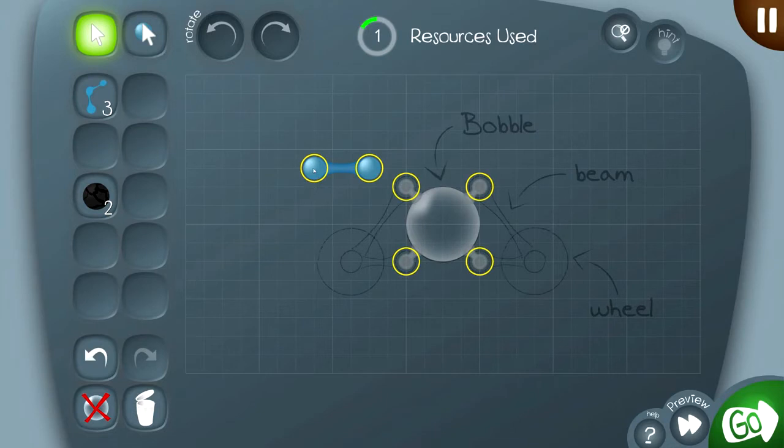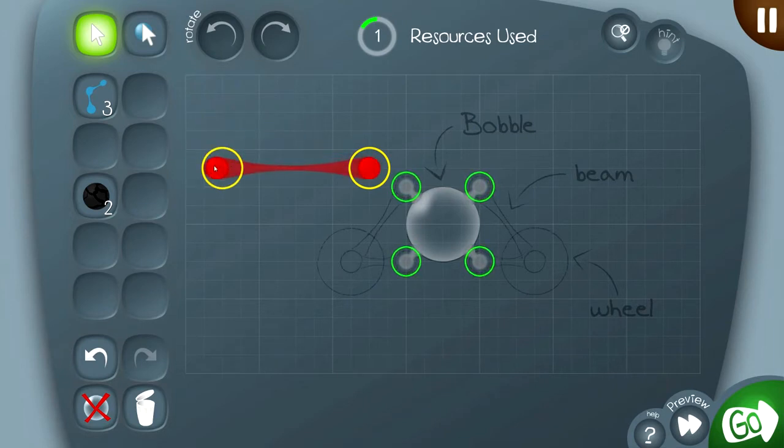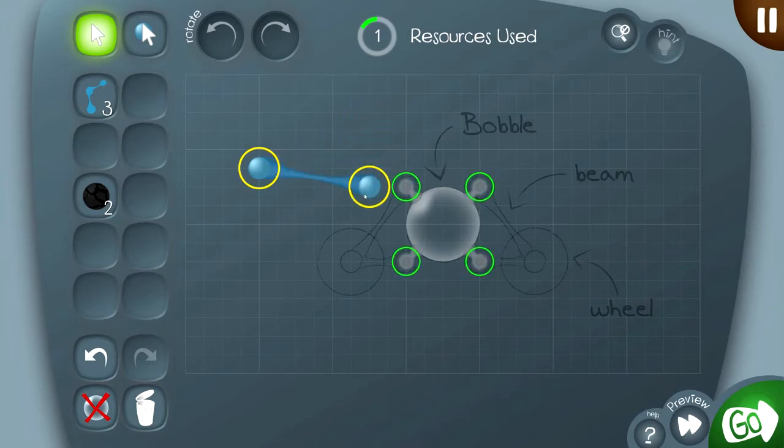One thing to know about beams is that there's a limit to how long they can be. If I stretch it out too far, it'll flash red, letting me know that I've tried to make it too long. The other thing that you can see happening when I grab this end of this beam is that there are these green circles flashing on the bobble. They're basically suggesting that this would be a good place to put that beam.